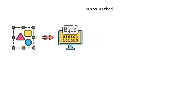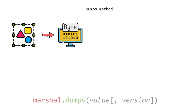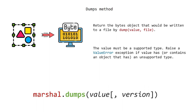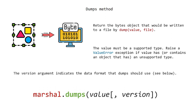The dumps method returns the bytes object that would be written to a file by dump. The value must be a supported type. It raises a ValueError exception if the value has or contains an object of an unsupported type. The version argument indicates the data format that dumps should use.